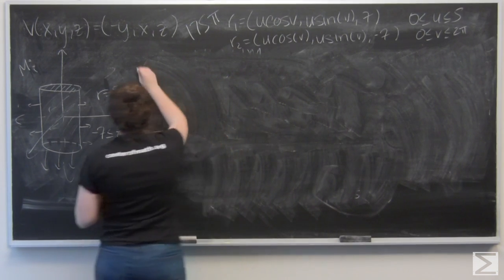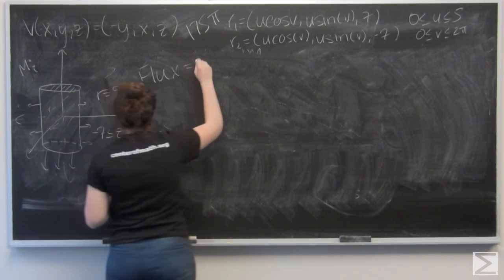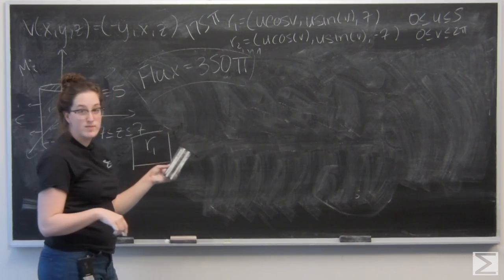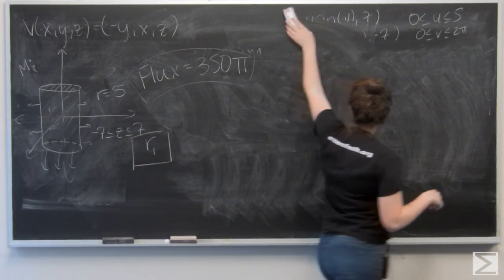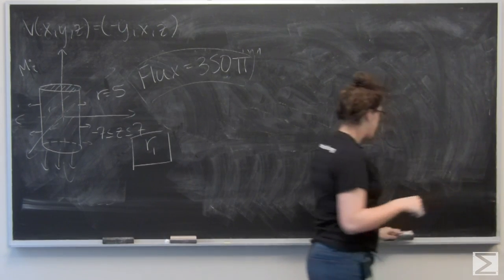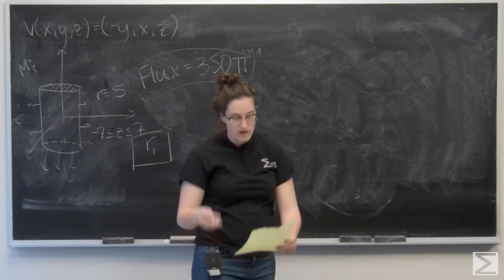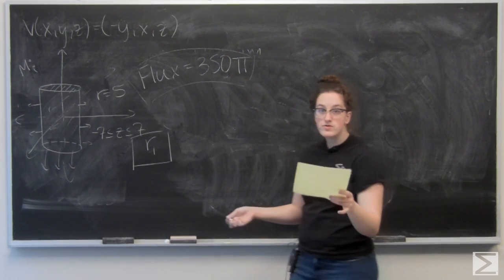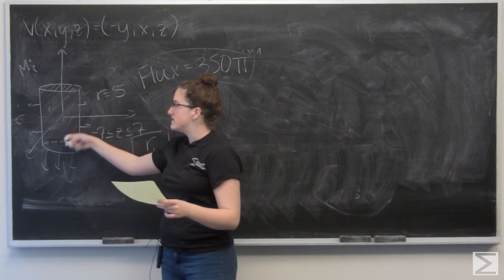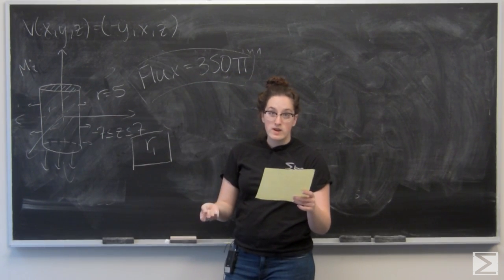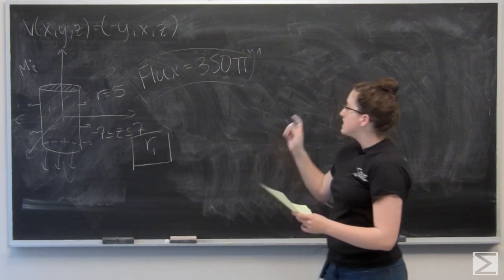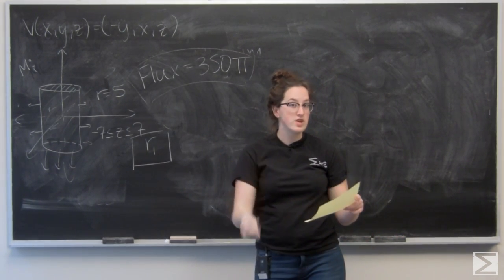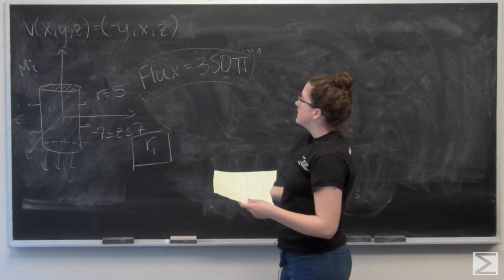The flux through M2 is 350π. Part C asks for the flux of V through the entire surface M — M1 plus the closing surfaces — and for that we use the divergence theorem. Divergence is the partial derivative with respect to X of the I component, plus the partial with respect to Y of the J component, plus the partial with respect to Z of the K component.